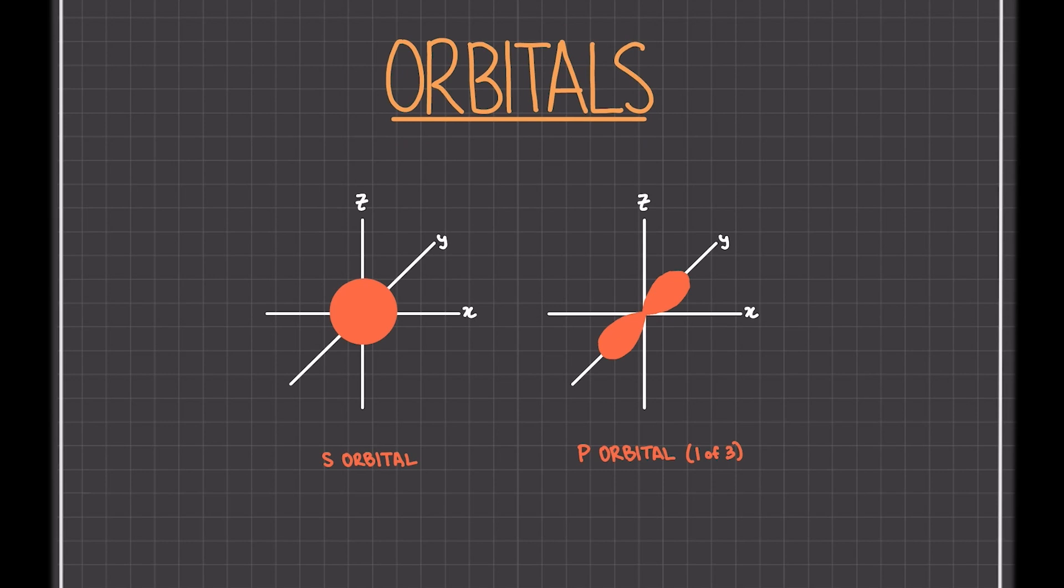Two visualizations of orbitals can be seen here, with the s orbital on the left and the p orbital on the right. Here the 1s orbital is shown. If we were to think of the 2s orbital, that would be an outer spherical layer outside that 1s orbital. As the energy level increases, so does the distance between the electron cloud and the nucleus, which is why the 2s orbital is further away from the nucleus than the 1s orbital.